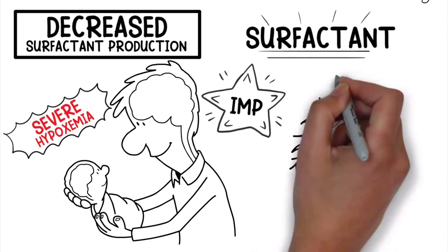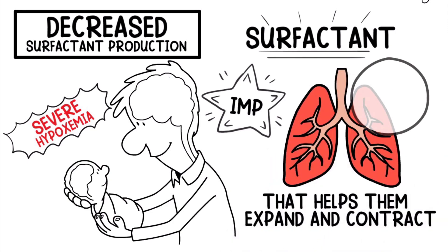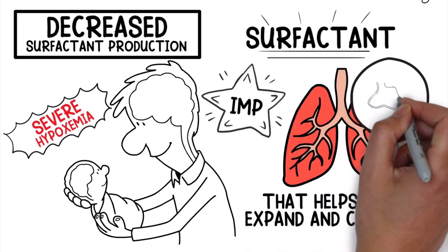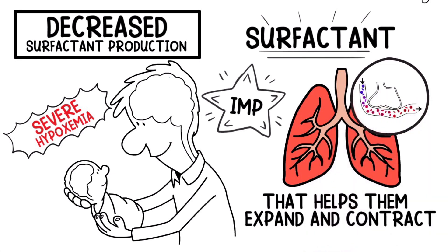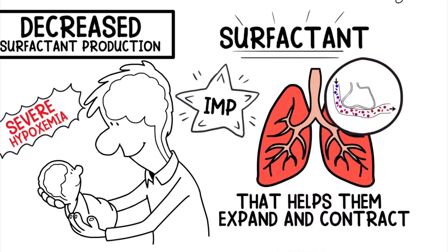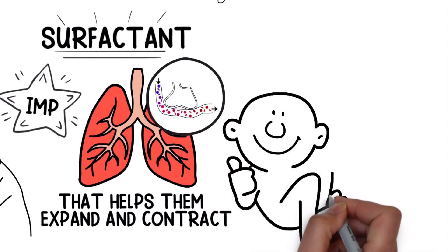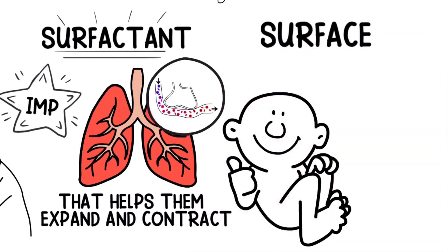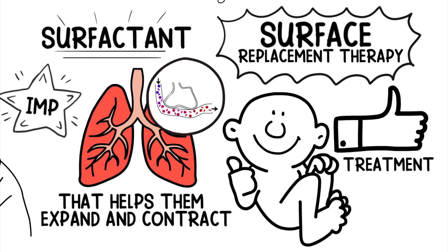Surfactant is an important substance in the lungs that helps them expand and contract. It also functions to keep the alveoli open so that gas exchange can occur. So with that said, if a newborn doesn't have enough surfactant, replacement therapy would be indicated as a treatment method for this condition.